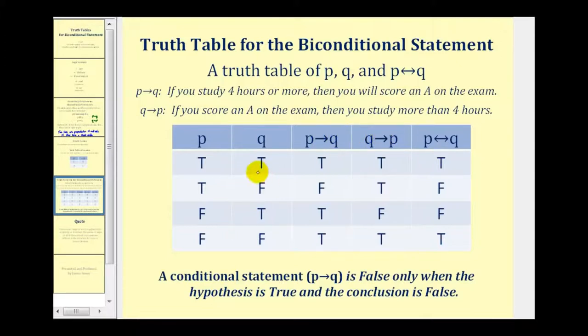And so by now we should be pretty familiar that for P and Q, we're going to have true true, true false, false true, and false false for the possibilities of P and Q. And probably the most important thing to remember here is that a conditional statement, if P then Q, is only false when the hypothesis is true and the conclusion is false.